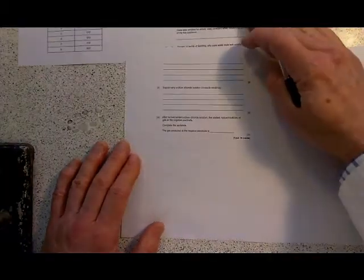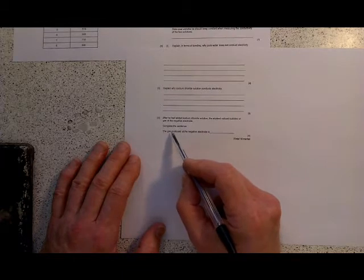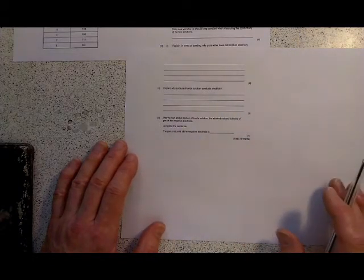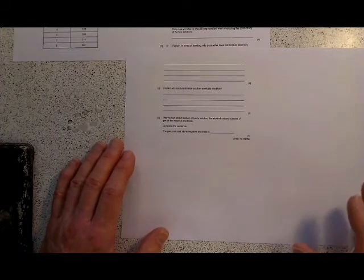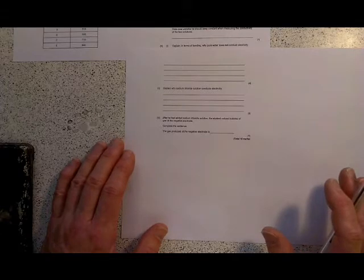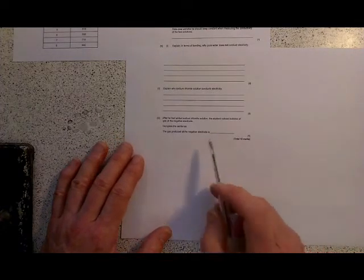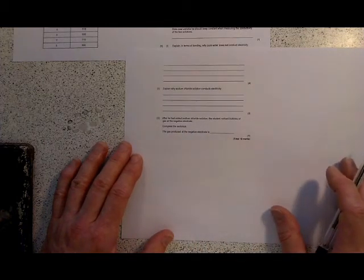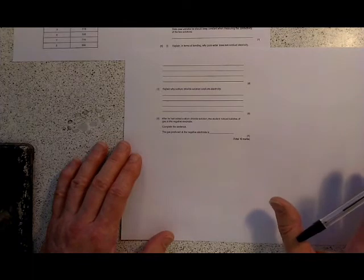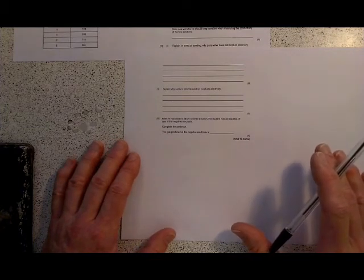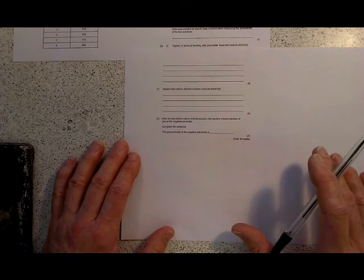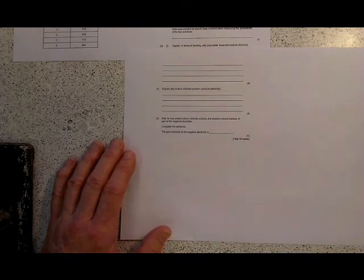After he had added sodium chloride, the student noticed bubbles of gas at the negative electrode. Complete the sentence. The gas produced at the negative electrode is. A lot of people jumped to the wrong conclusion on this question. They said, oh, gas. Sodium chloride, chlorine gas. No. Chloride ions are negative, so chlorine goes to the positive electrode. In this case, what's forming at the negative electrode is hydrogen. Why? Because we've got sodium chloride in our solution, and sodium is a much more reactive metal, much higher up the reactivity series than hydrogen. So in that circumstance, you always get hydrogen gas coming from the hydrogen ions in water instead of the sodium ions forming sodium metal. That's a very common question. Look out for that.